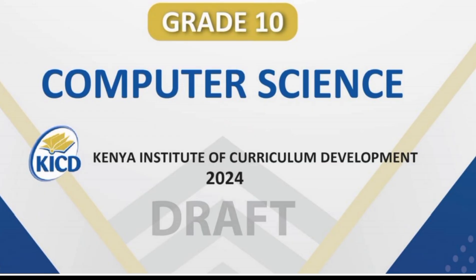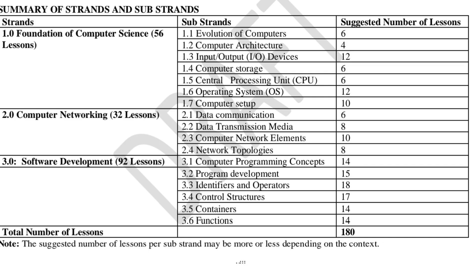In computer science, another learning area under STEM pathway, the first strand is foundation of computer science, allocated 56 lessons. The substrands are: evolution of computers, computer architecture, input-output (I/O) devices, computer storage, central processing unit, operating system (OS), and computer setup.